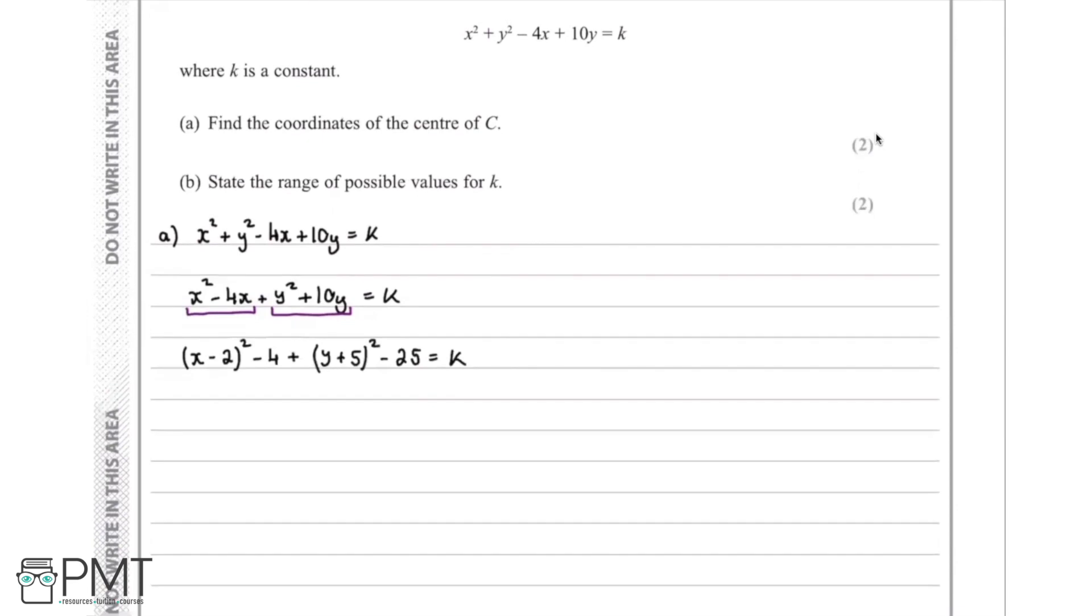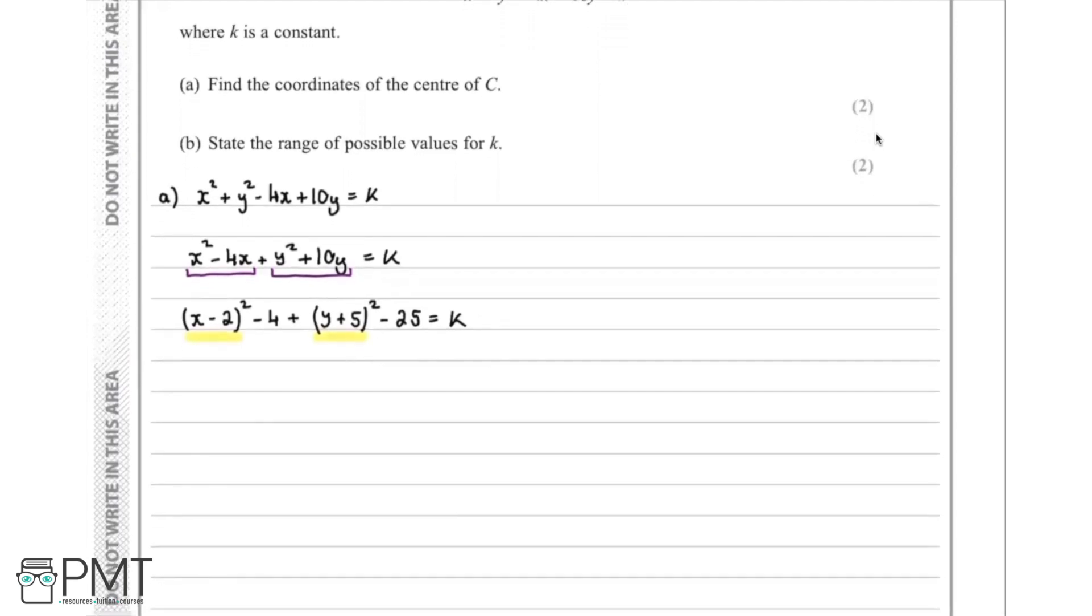So we could now rearrange and get this equation into the kind of form we know with the radius on the other side. But all we're asked to do here is find the coordinates of the center C. So what we can do is we know we can read the coordinates from the x minus 2 and the y plus 5 terms. So that means the x coordinate is going to be 2 and the y coordinate is going to be negative 5.